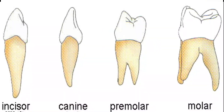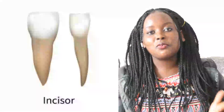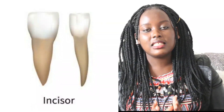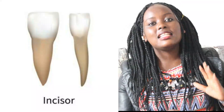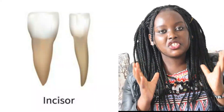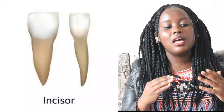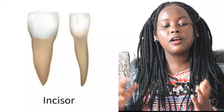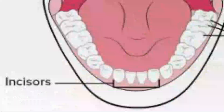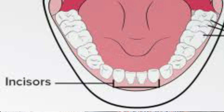Next we are going to look at the different types of teeth. We have four different types: the incisors, the canines, the premolars, and the molars. Starting with the incisors — as we can see, they have one root and are chisel-like in shape, which makes their function to be cutting food. In our teeth structure, we have four incisors in both the upper and lower jaws.